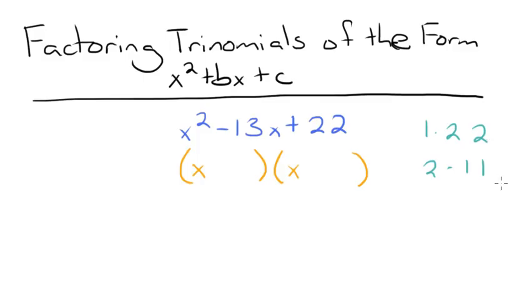So which set of factors, when both numbers are negative, add to negative 13? The only option is negative 2 and negative 11. So we're going to write minus 2 in one set of parentheses and minus 11 in the other set.